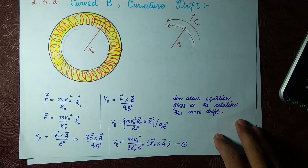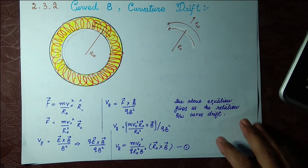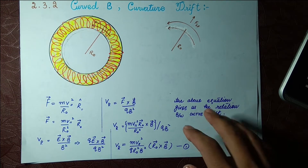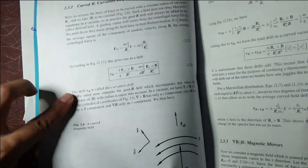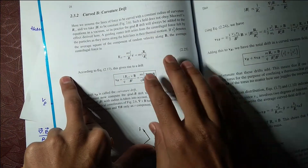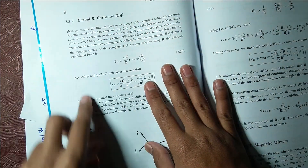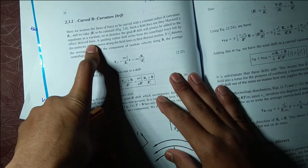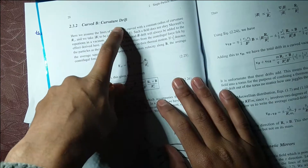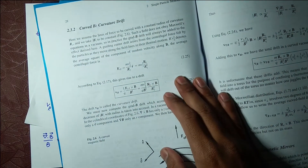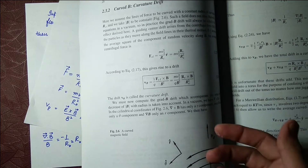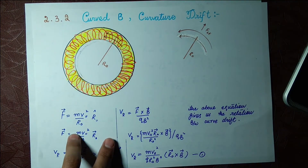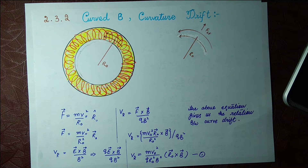Assalamualaikum dear students, welcome back to Learn Daily Physics. Today we are going to find out the relation for page number 28 and F10, curved V and curvature V toroidal drift - we also call it a toroidal drift, a drift for a toroid. We are going to find that out today.